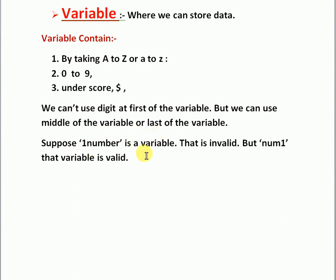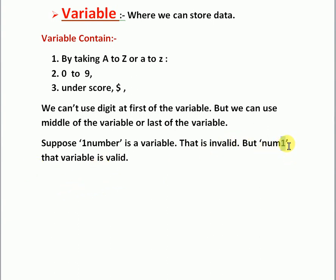For example, the variable name '1number' is invalid because digit '1' is used at the first position. But 'number1' is valid because '1' is used at the last position of the variable name.